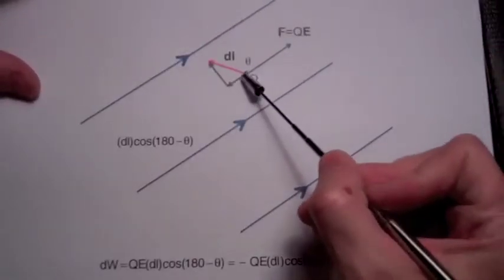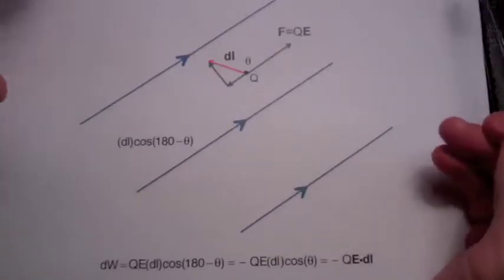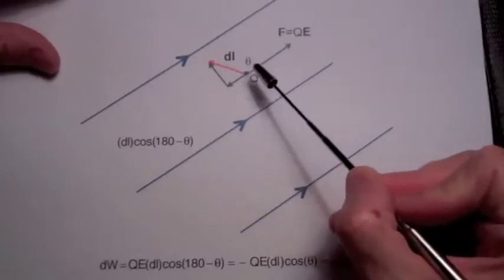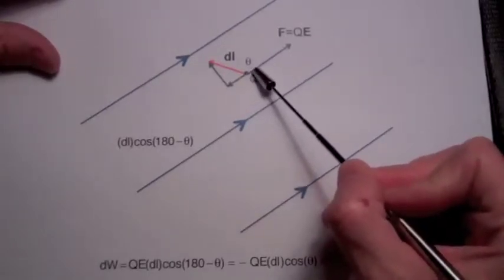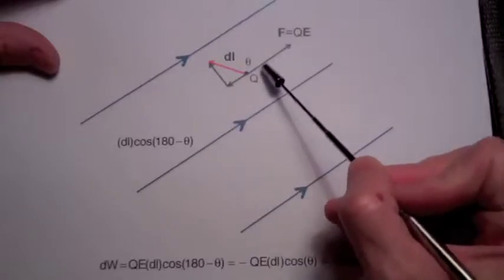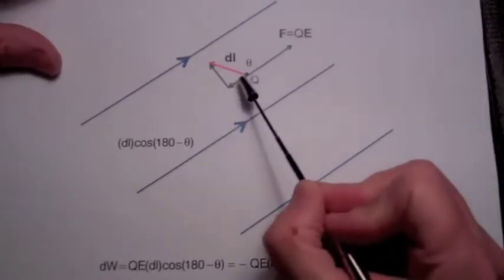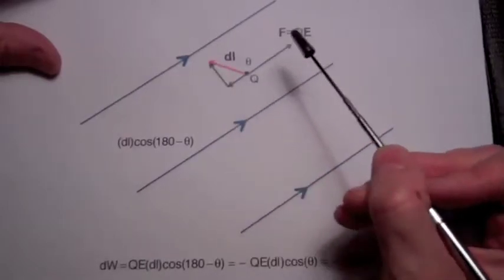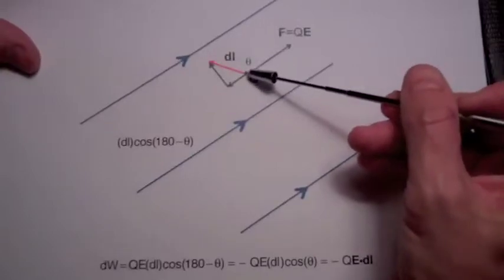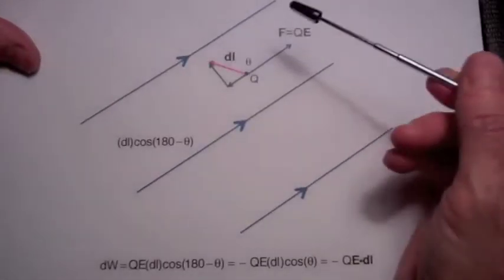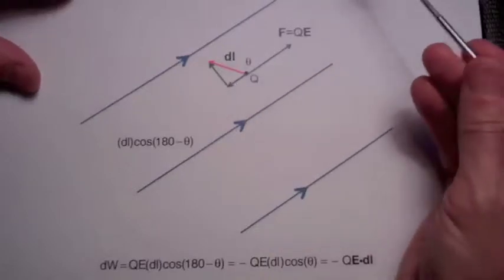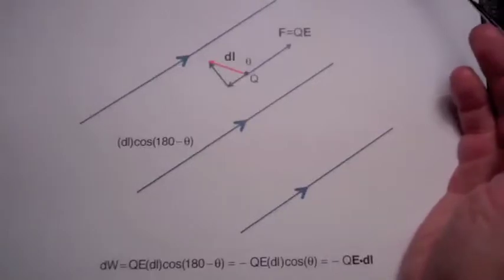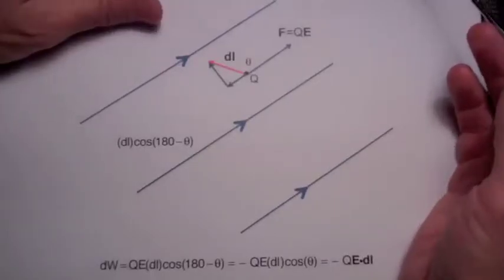So here is our charge in an electric field — the electric field does not have to be uniform for what we are discussing here. At this point, this charge would experience a force due to the electric field given by this arrow here. Now, I am going to take this charge and displace it along D sub L in the direction indicated. It is going to take some force to displace it. Although I am not going directly against the electric field, it is still taking some force to move along DL, and I want to determine how much work is required to do that.